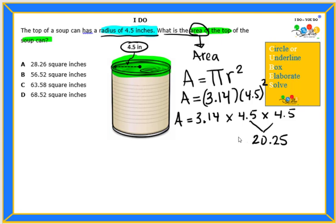And we still have to multiply that times 3.14 to get the area of the top of the soup can. Okay, so now we're going to multiply 3.14 times 20.25. When we are multiplying long numbers I like to put the longer number on top. So I'm going to put 20.25 on the top and then I have 3.14. Let's make sure we stay organized.